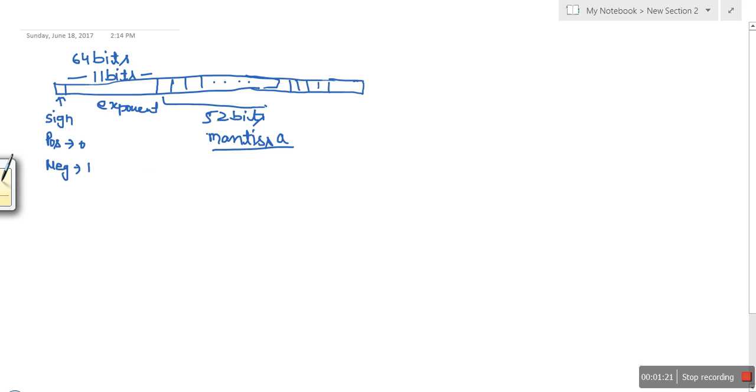Now we're going to see the process to convert a real number into double precision format. Let's say we have the number 12.513, the same number I used for single precision. First, you need to determine the sign. The sign of this number is positive, so the sign bit will be zero. Second step: you need to find the binary equivalent of this number.